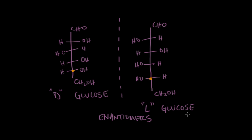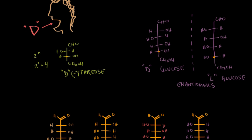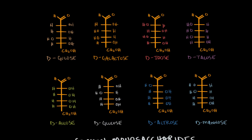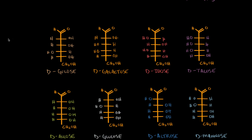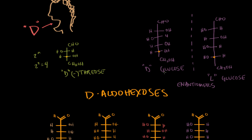Now, if the D and L aldohexoses are enantiomers, that means all of the D aldohexoses have to be diastereomers of each other, because they're not superimposable and they're not mirror images. I've drawn out here all of the D aldohexoses — there are eight of them. D-glucose and L-glucose are enantiomers; they differ at every single carbon.